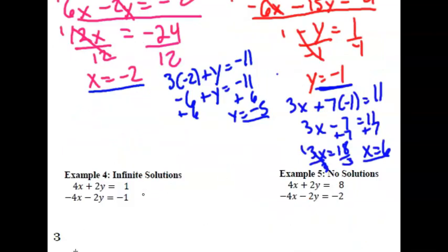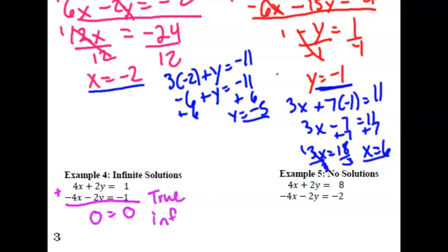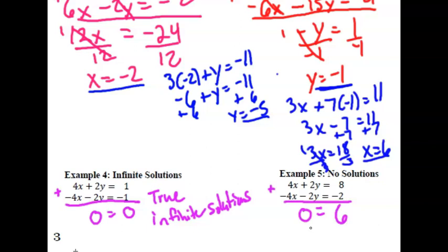Let's look at examples 4 and 5 — infinite solutions or no solution. For example 4, combining the two rows gives 0x plus 0y equals 0, which means 0 equals 0 — always true — so that's infinite solutions. For example 5, adding the two equations gives 0x plus 0y equals 6, and 0 is never equal to 6 no matter what those variables are, so that's no solution.